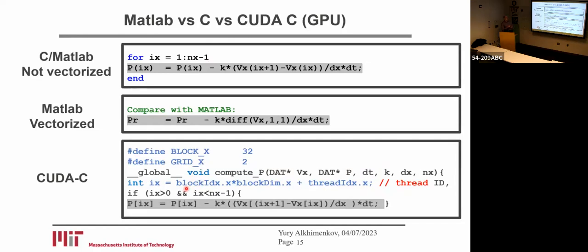Meaning that we can execute and update pressure simultaneously. Because there are many little CPUs, we simply update all pressure simultaneously instead of sequentially going through the spatial domain using a CPU. That's the main difference.